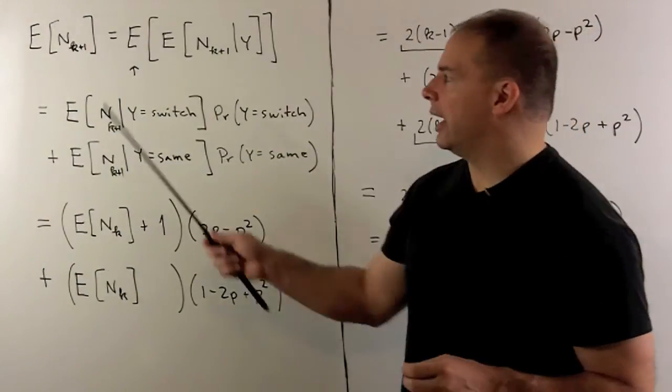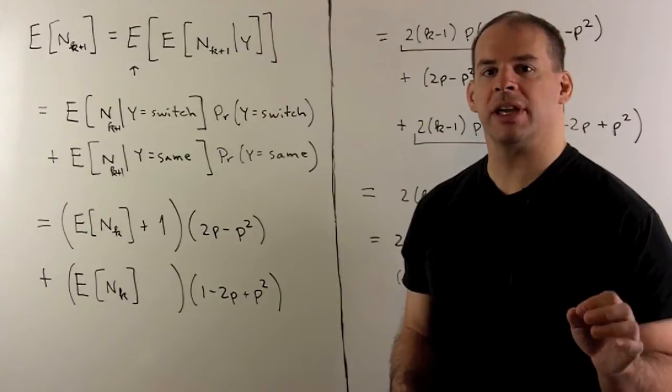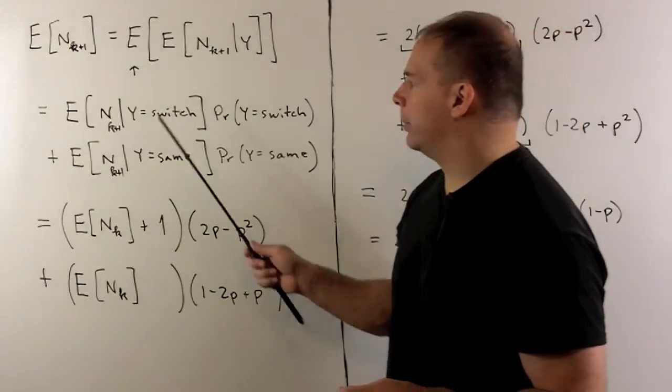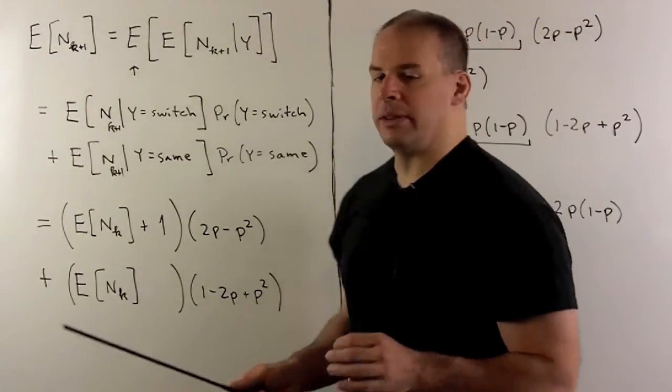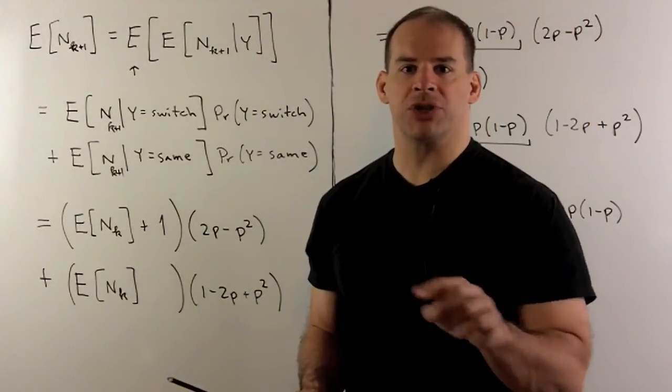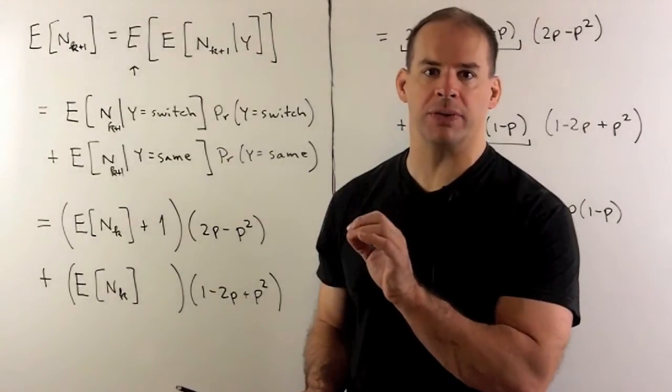Now, N sub K plus one is the random variable for the number of switches in K plus one flips. We apply our conditioning formula. Then I note